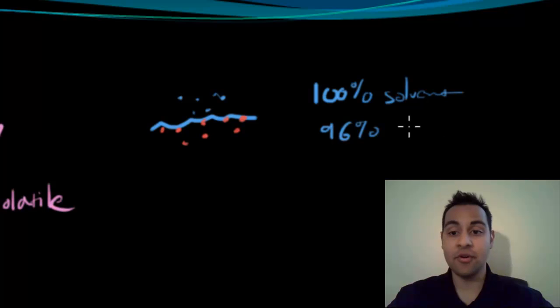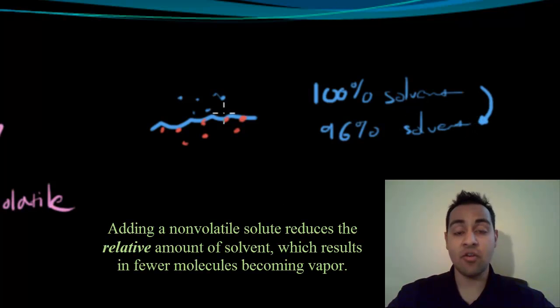this lowering of solvent concentration means that there are relatively less molecules of the solvent able to enter the vapor phase and generate vapor pressure. So adding a solute that's non-volatile lowers the overall vapor pressure.